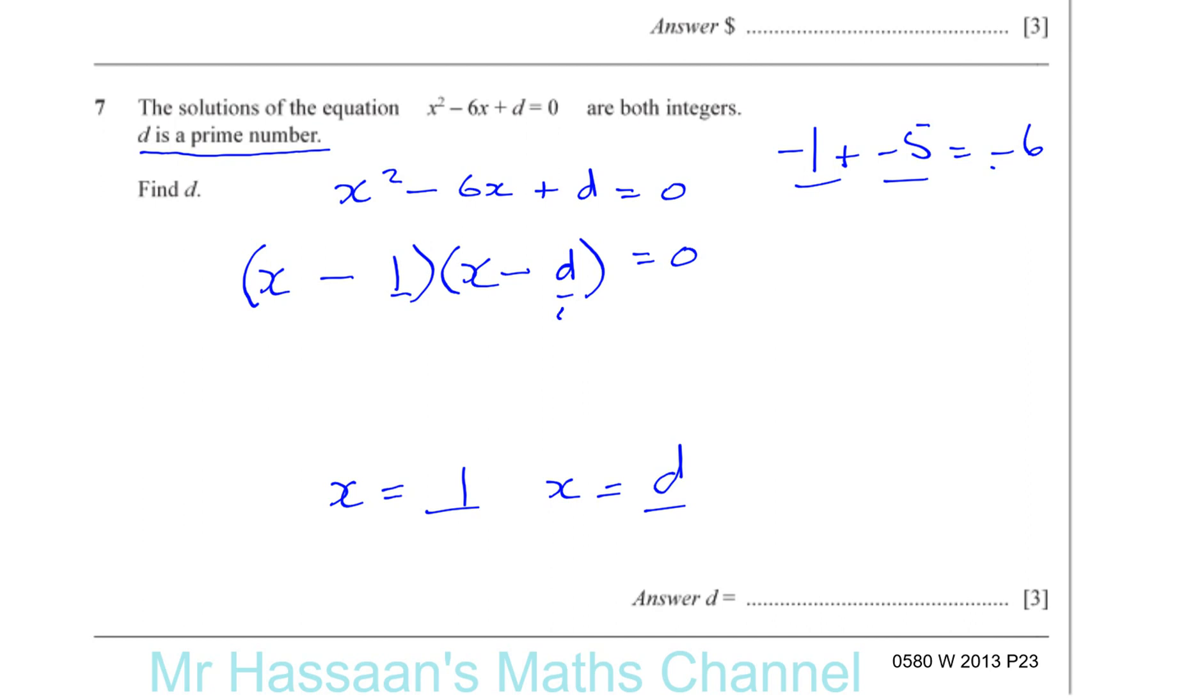So x minus 1 times x minus d equals 0, x equals 1 or x equals d. So x is equal to 5. So d must be 5. You get x minus 1 times x minus 5 equals 0. So you have x equals 1 and x equals 5. And if you expand that, you get x squared minus 6x plus 5. So d definitely is 5.